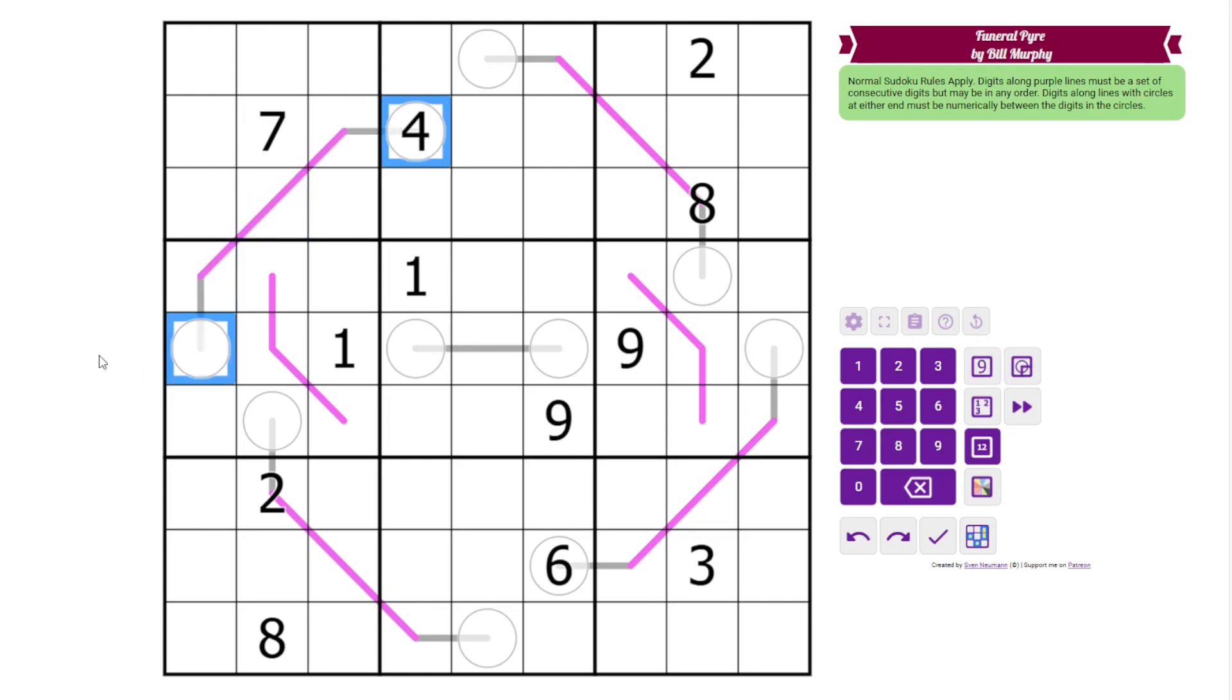Then we also have between lines, and most of the between lines and the Renban overlap. So on the between lines, the digits along the line, which in this case are the same digits that were on the Renban, are between the two digits in the circles.